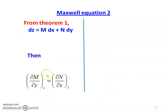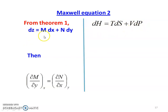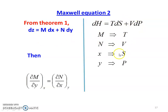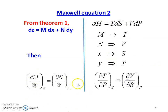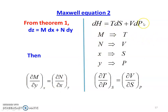Second Maxwell's equation: again applying theorem one — dz equal to m dx plus n dy. The second equation is dh equal to T ds plus v dp. Comparing: m equal to T, n equal to v, x equal to s, y equal to p. Writing the equation: dou T by dou p at constant entropy equal to dou v by dou s at constant pressure. This is Maxwell's equation number two.